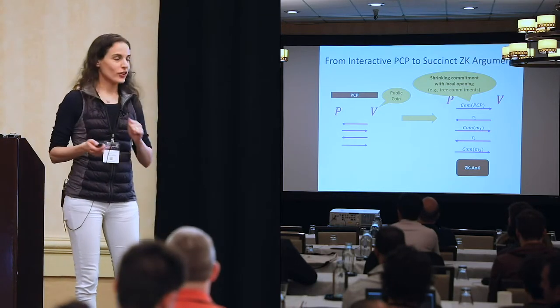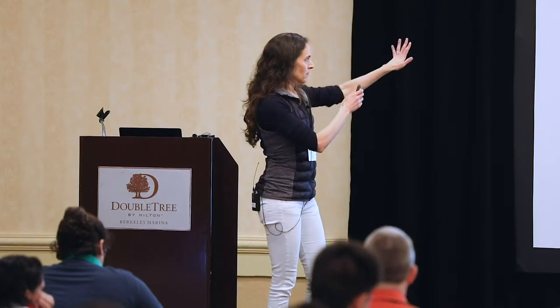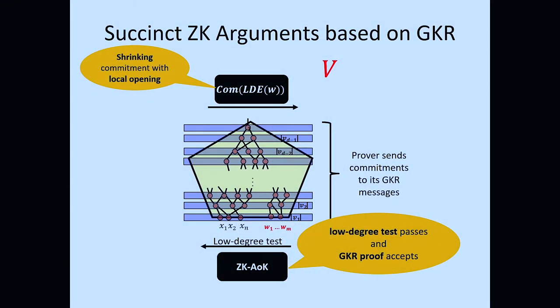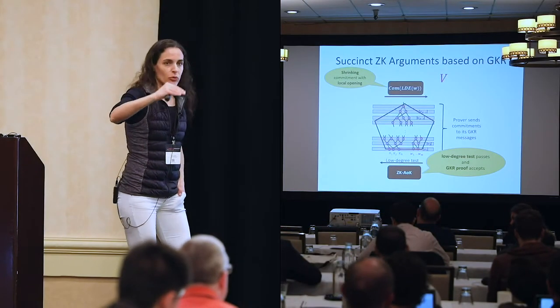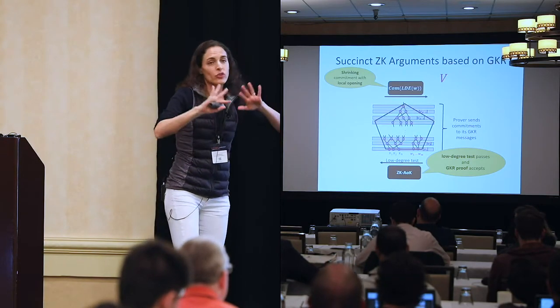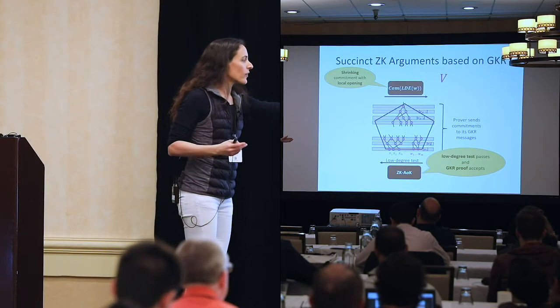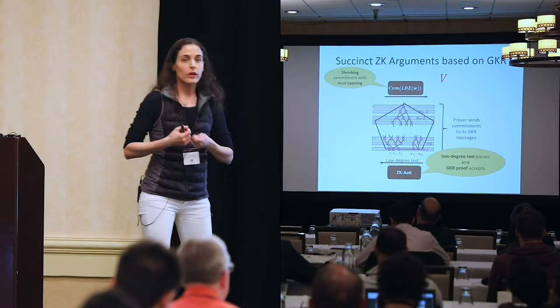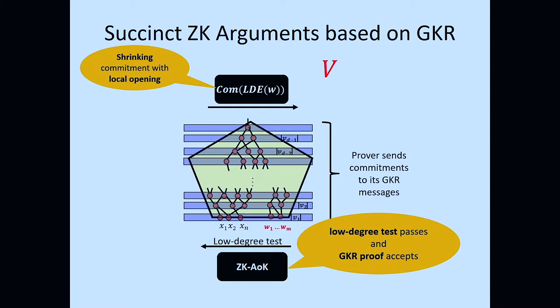Here's the basic idea of a succinct zero-knowledge argument based on GKR. First commit via a shrinking commitment to the low-degree extension of the witness. Run the GKR protocol in d phases — essentially d rounds. You also need to do a low-degree test. The verifier sends his query for the low-degree test, and the prover gives a zero-knowledge proof of knowledge that the low-degree test passed and the GKR proof accepted. One important point: this is a public-coin protocol with many rounds. In practice, one can apply the Fiat-Shamir heuristic to reduce interaction and make it non-interactive.